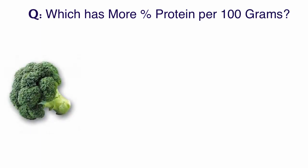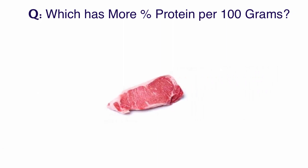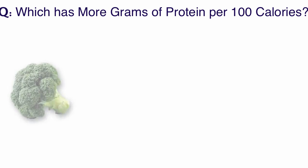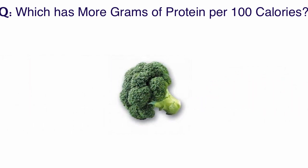A question: which has more percent protein per 100 grams? If you had 100 grams of broccoli and 100 grams of steak, which has more protein? The answer is steak. But it's interesting how people can shift information around depending on your point of reference. So here we ask: which has more grams of protein per 100 calories? If you had 100 calories worth of broccoli and 100 calories worth of steak, which one has more grams of protein? The answer is broccoli.